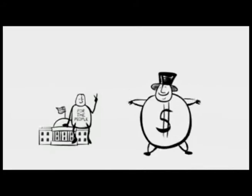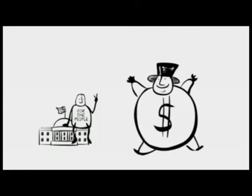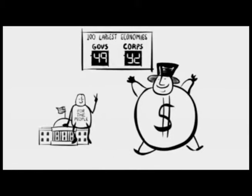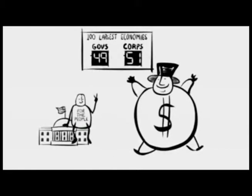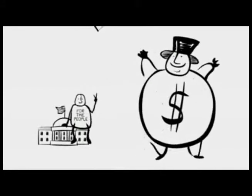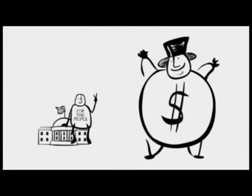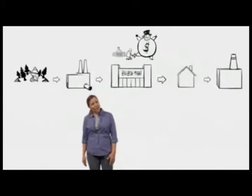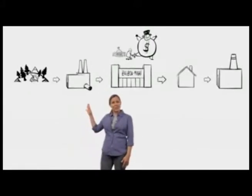Then along came the corporation. Now, the reason the corporation looks bigger than the government is that the corporation is bigger than the government. Of the 100 largest economies on Earth now, 51 are corporations. And as the corporation has grown in size and power, we've seen a little change in the government where they're a little more concerned in making sure everything's working out for those guys than for us. Okay, so let's see what else is missing from this picture.